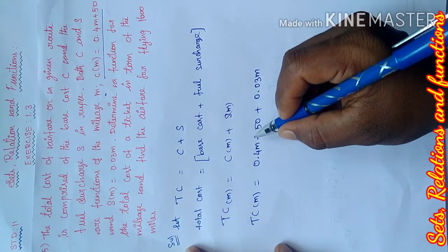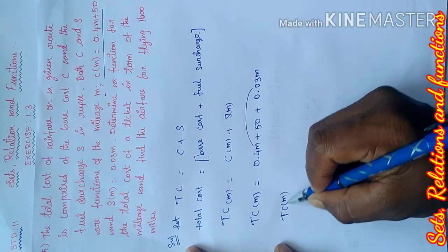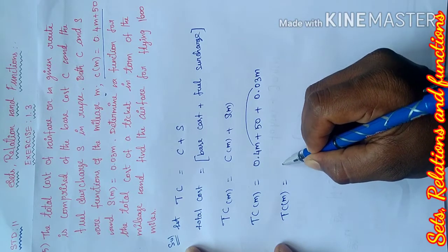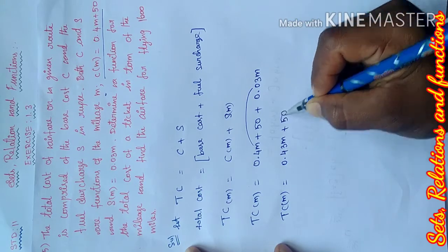Now, if you add M, therefore TC of M equals 0.43M plus 50.